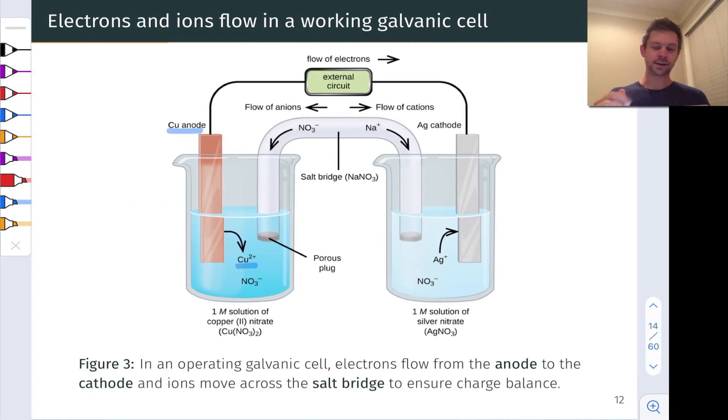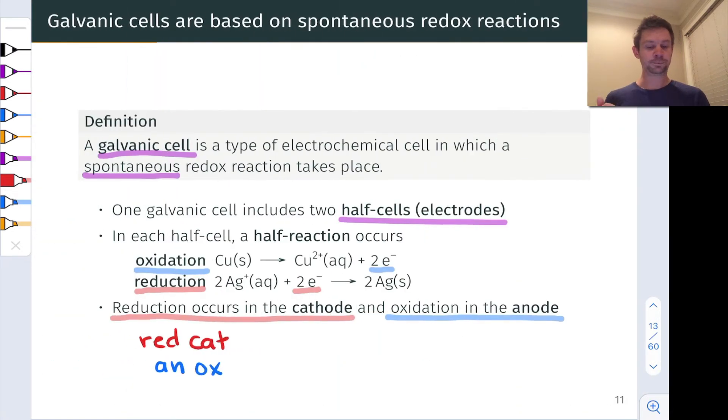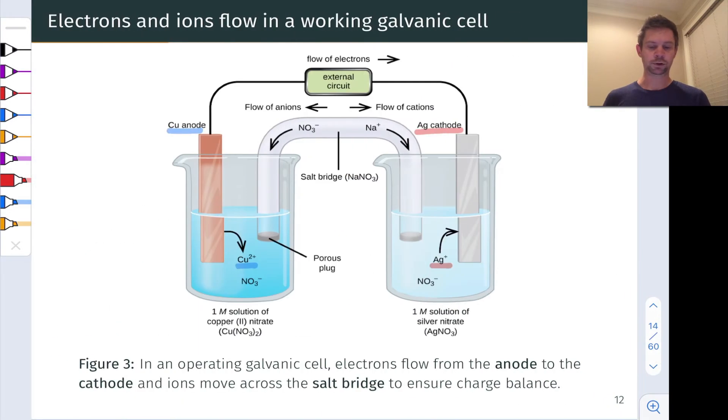On the right-hand side, we have a strip of silver metal immersed in a solution of silver nitrate. Notice here that the silver metal and silver cation are the two components of the reduction half reaction that we looked at previously.